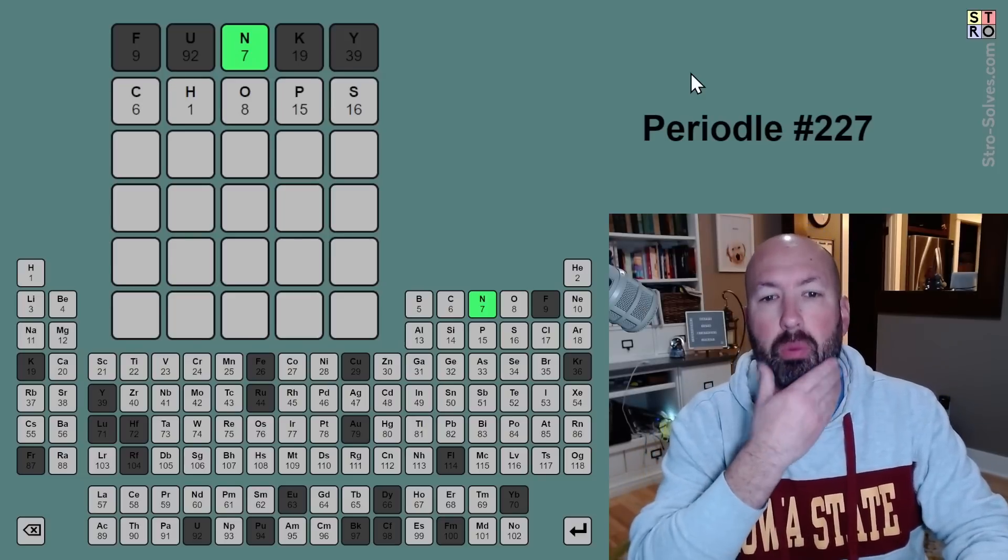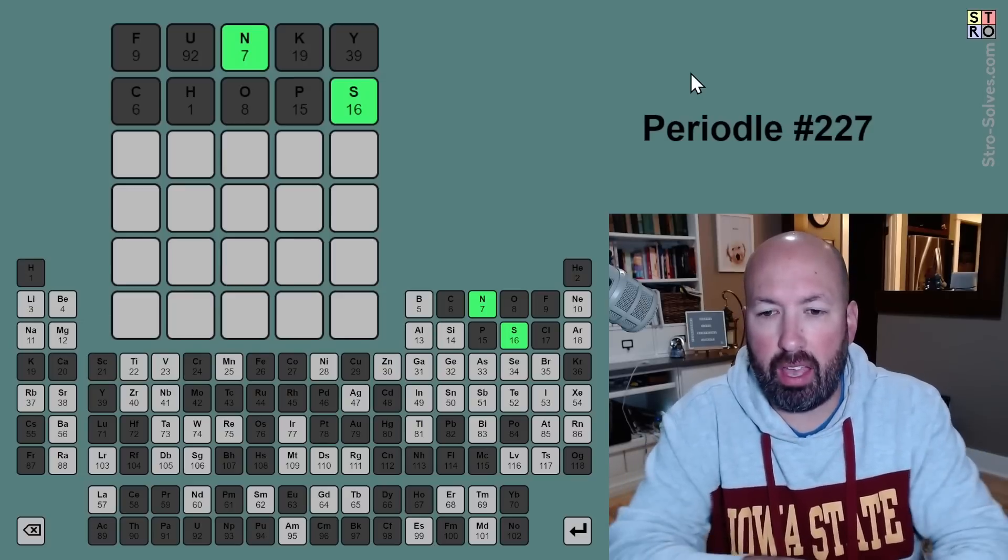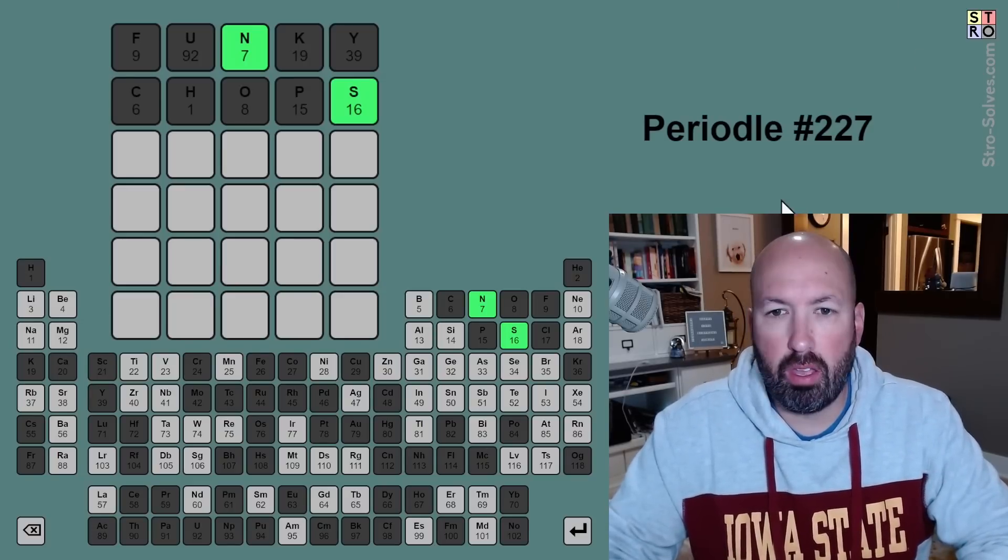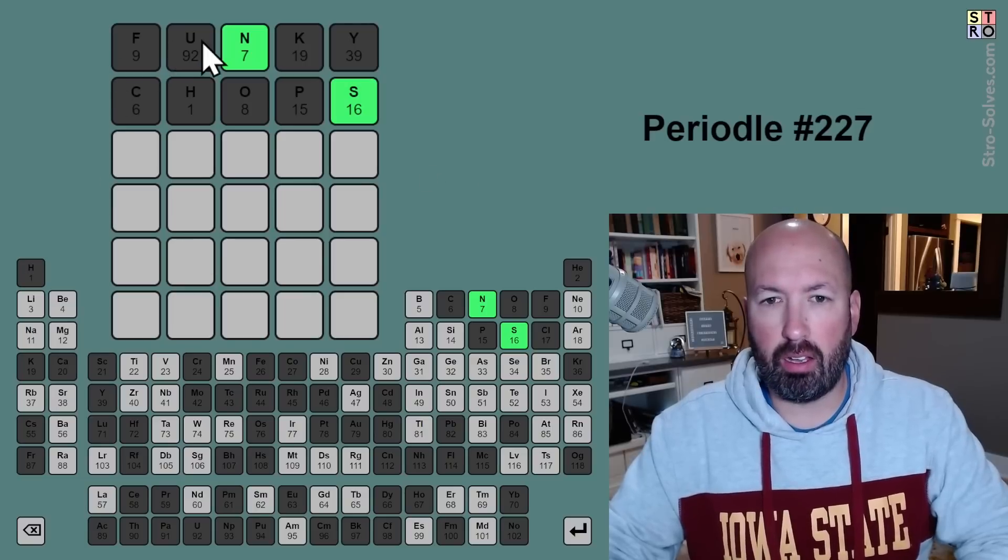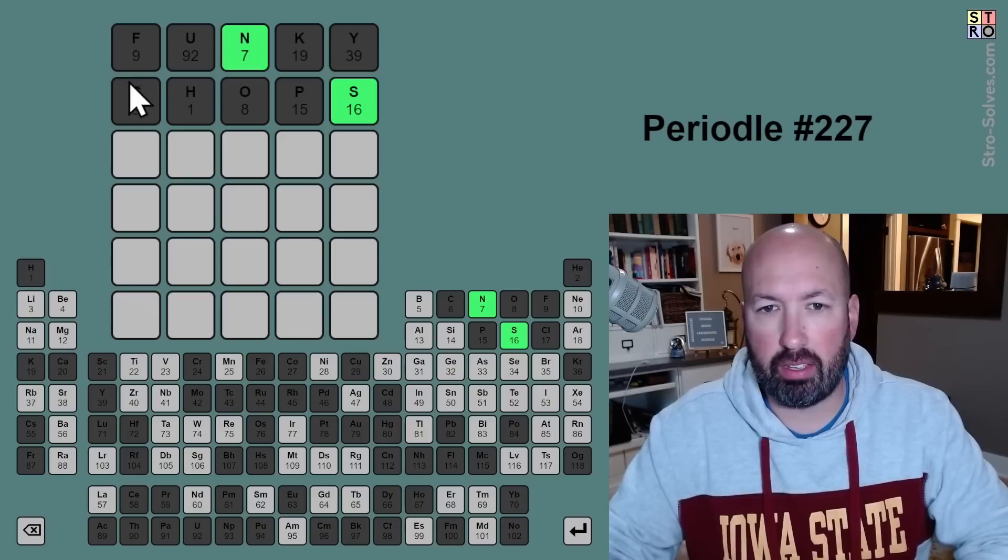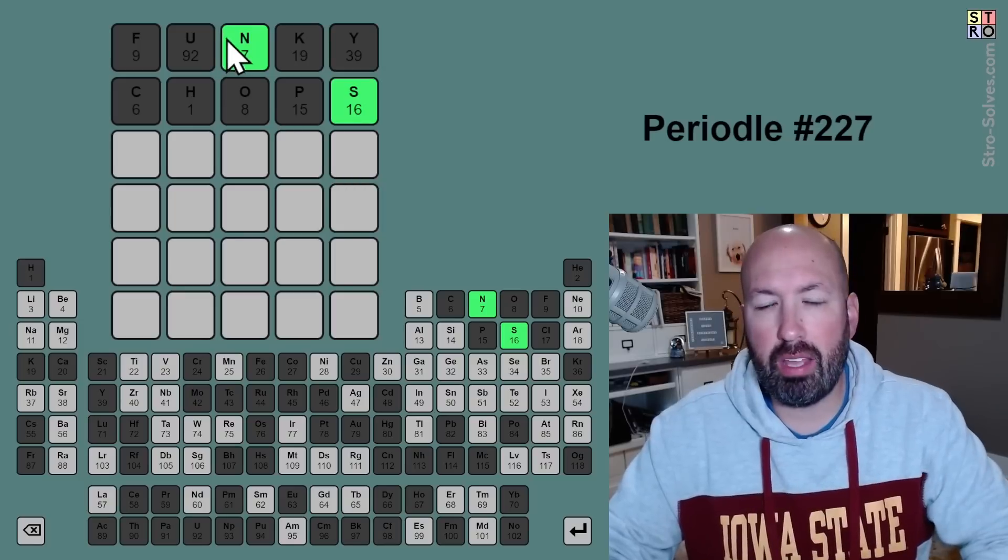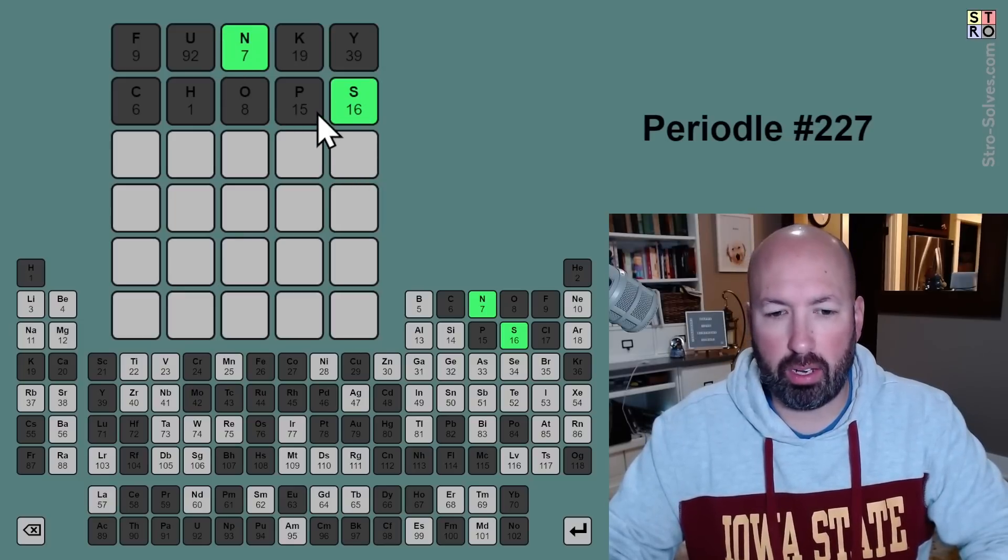So, the question is, do we want to do chops? Let's do chops. Okay, and the S is green now, too. So we have an N and an S, and that was really good. We've eliminated a lot of stuff, everything that has C, H, O, and P as well. So what do we want to do now? Let's see, between the N and the S, what would go there?